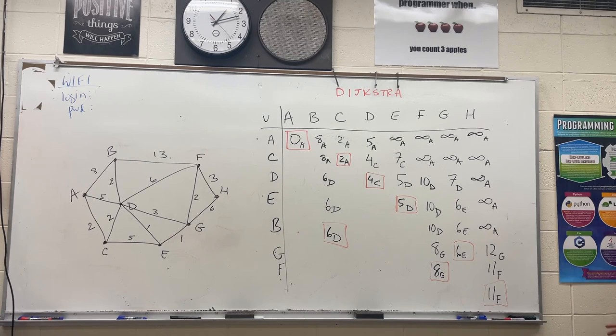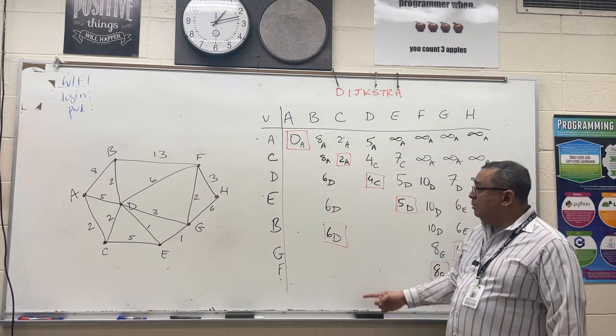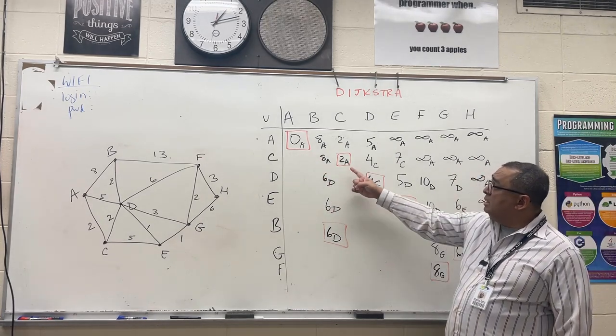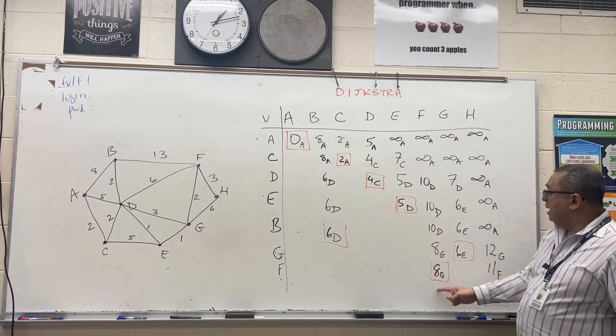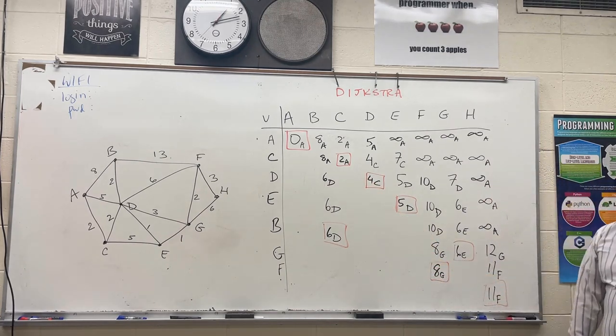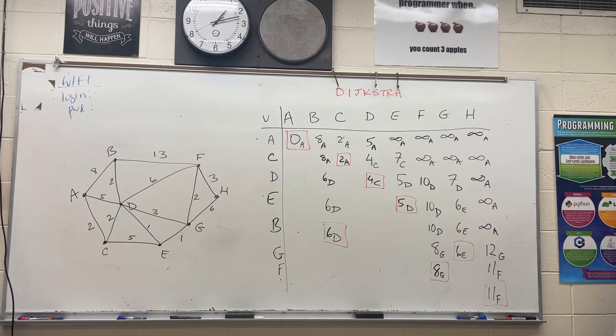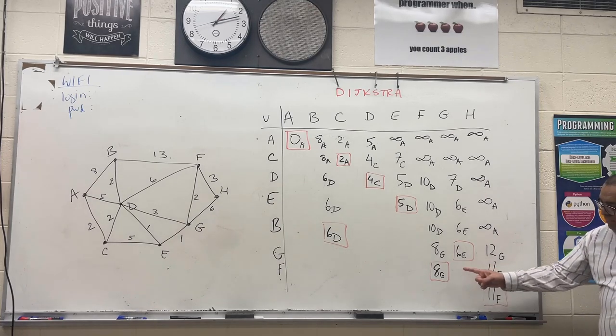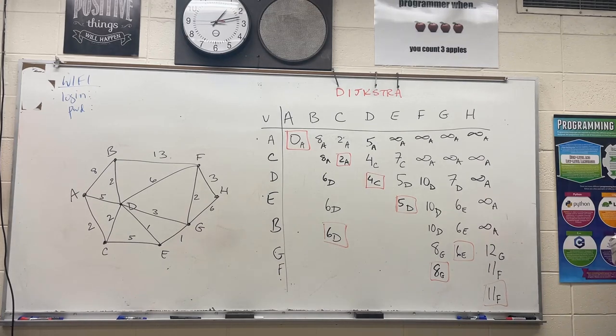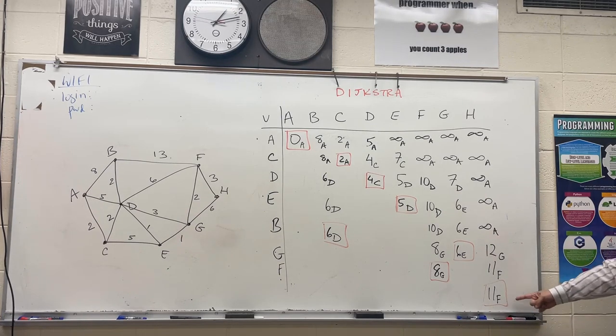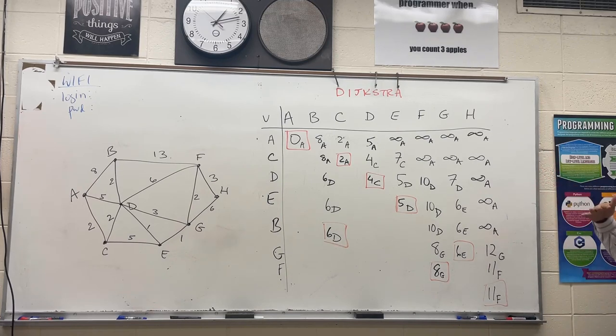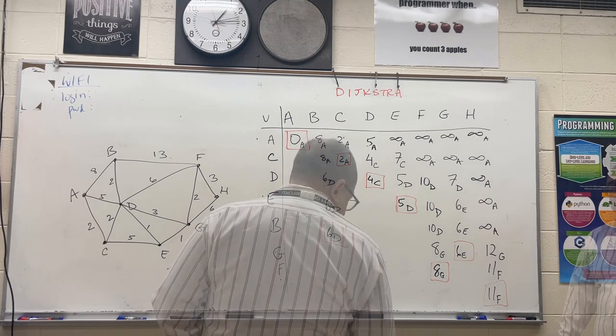So now we have the cost of going to any node from A. The cost from going from A to A is 0. From A to B is 6. From A to C is 2. A to D is 4. E, F, G, and H. What I need you to do now is work with your partner to figure out how can we use these subscripts to figure out what order we have to visit the nodes to get this cost. For example, if I was going to go from A to H, what would that path look like? I'll give you a hint. You have to work backwards. See if you can figure out how to do that.